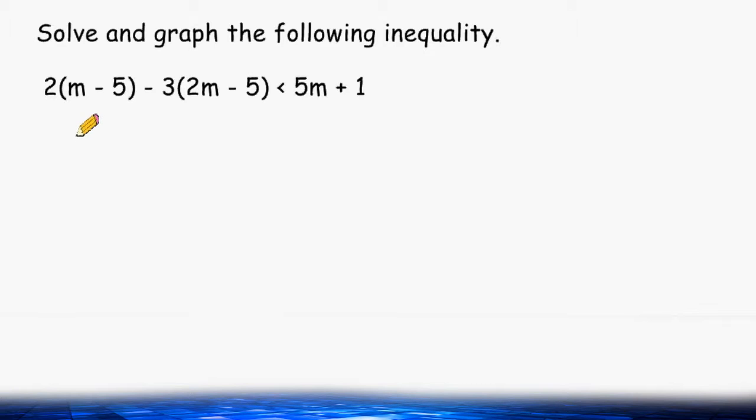We have to solve and graph the inequality 2 multiplied by the quantity m take away 5 minus 3 times the quantity of 2m take away 5 is less than 5 times m plus 1.